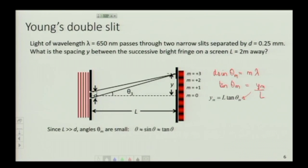Now, l is much greater than d, so we say the angles are small, so the sine and the tan are approximately equal, so we are setting these equal to one another. So what you're doing is you're saying since d sine theta is m lambda, we can write sine theta is m lambda over d.